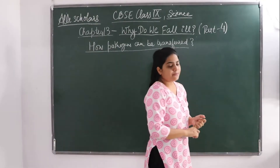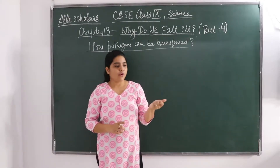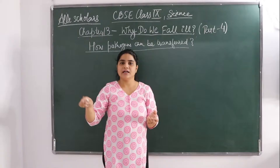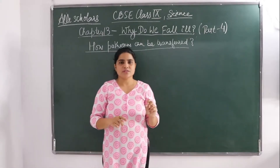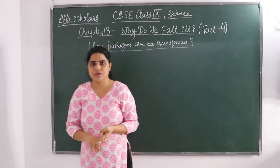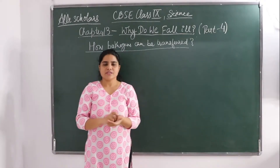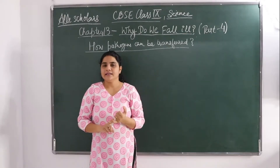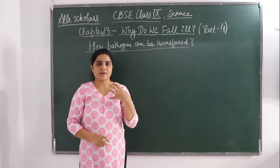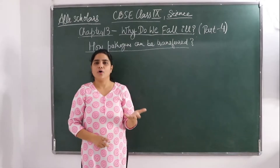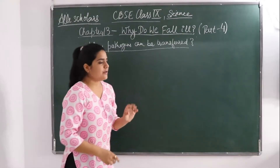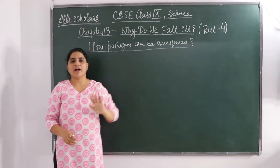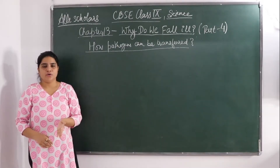The fourth way is receiving a bite from an infected animal or insect carrying the pathogen — for example, a mosquito carrying a particular disease. If it bites you, you will also suffer from that disease. The fifth way is consuming contaminated food or water.